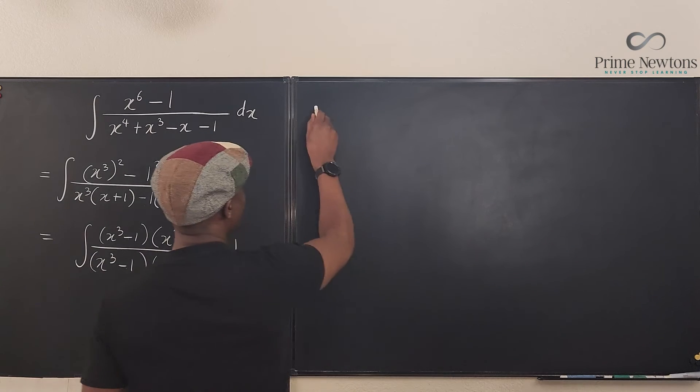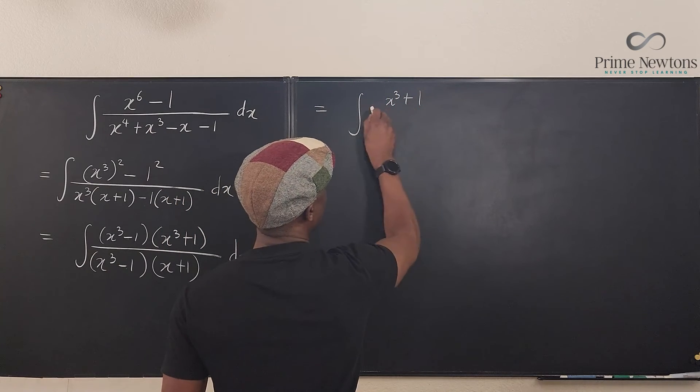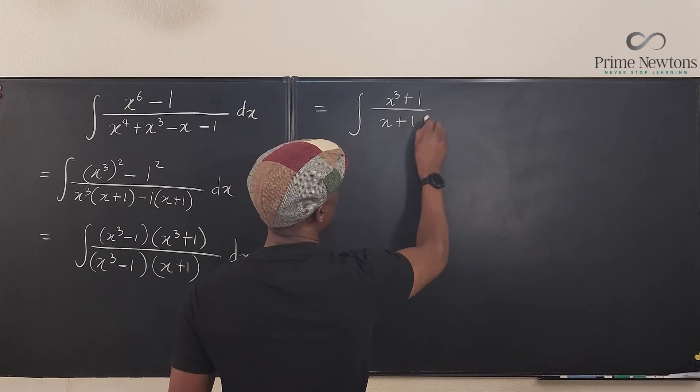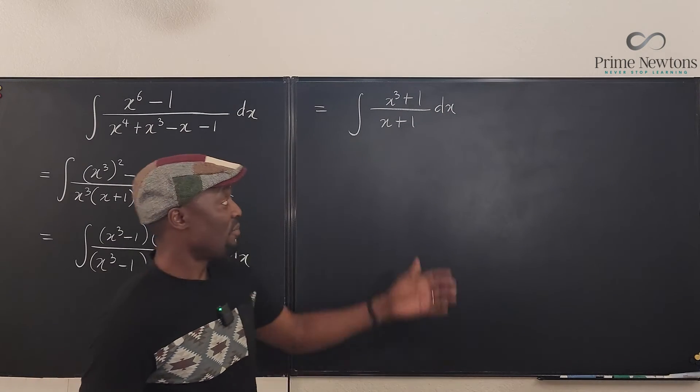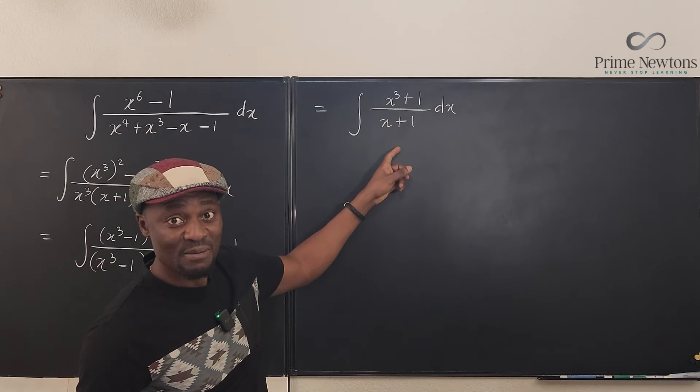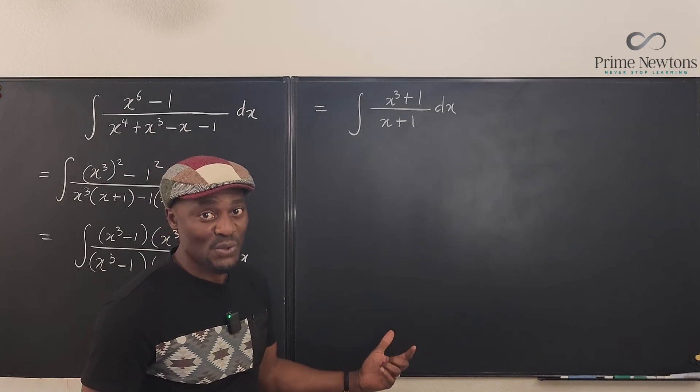So what we have, this is equal to the integral of x cubed plus one over x plus one dx. We still have the same problem. The problem we have is the top is bigger than the bottom. Remember the top has to be smaller than the bottom before you do your integrals.